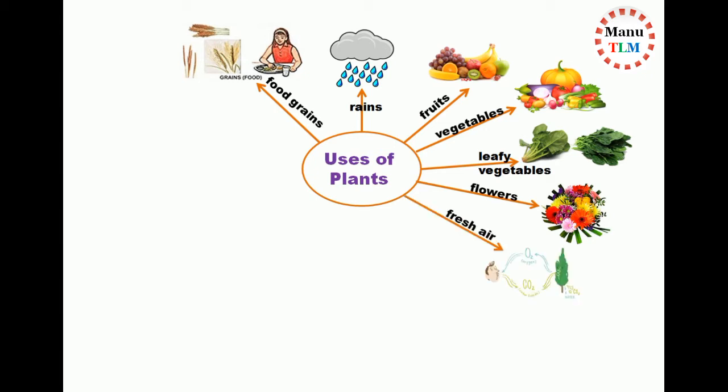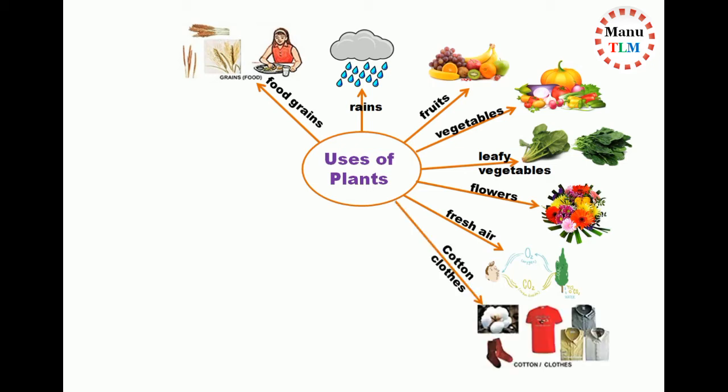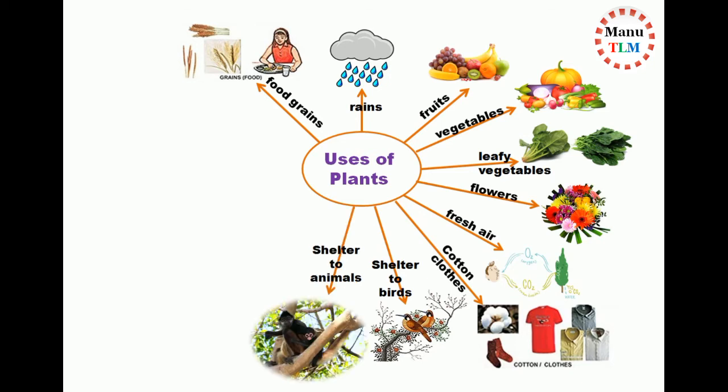Plants use fresh air. Plants such as cotton plants provide cotton to make clothes, and provide shelter to birds. Plants provide shelter to animals.